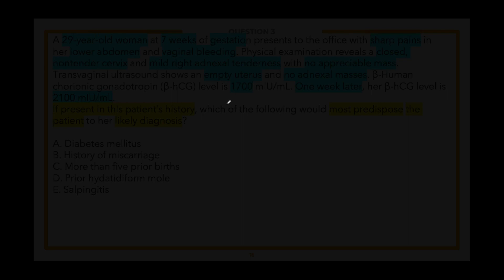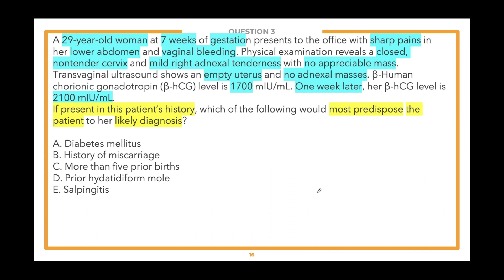Answer choices, starting from the bottom: E) salpingitis, D) prior hydatidiform mole, C) more than five prior births, B) history of miscarriage, A) diabetes mellitus. The poll is open — select the best answer.